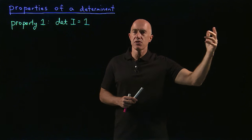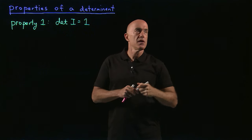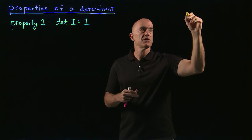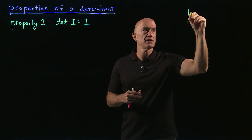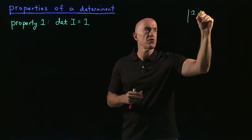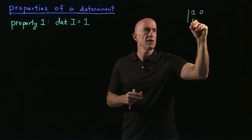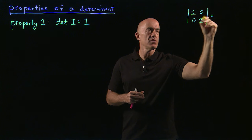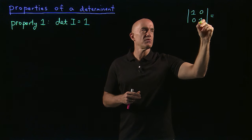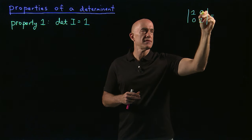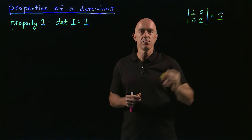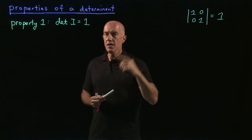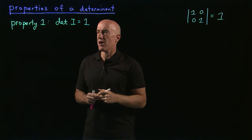In terms of two by two matrices this is very easy. The determinant of the two by two identity matrix is one times one minus zero times zero, which equals one. That's the first property.